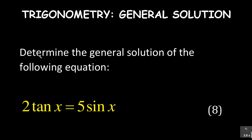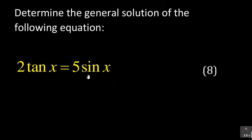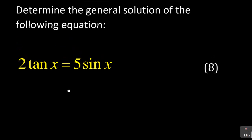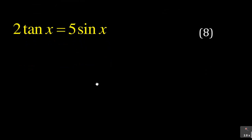It says we need to determine the general solution of the following equation — just look at the mark allocation. This is eight marks and this question was taken from one of the previous papers, so it is something you can find in your exam. We are given: 2tan(x) is equal to 5sin(x). So how do we solve that?